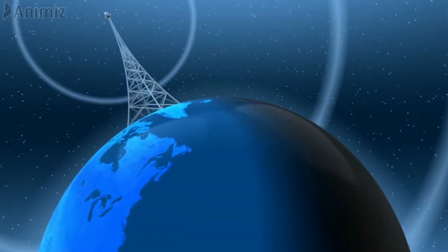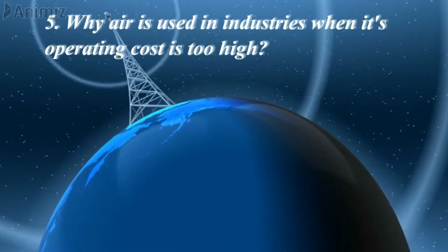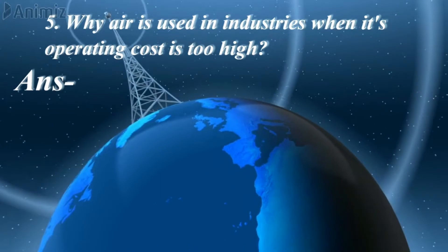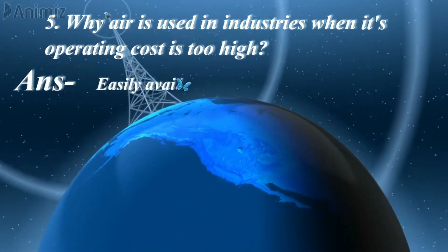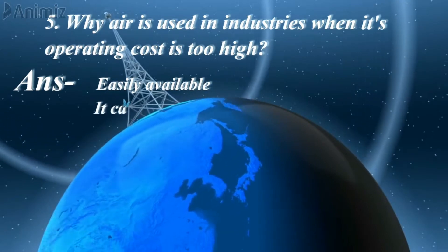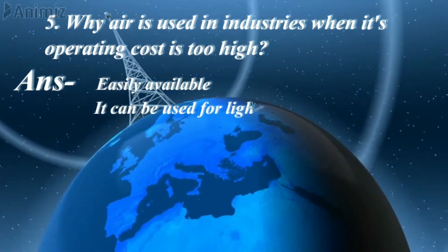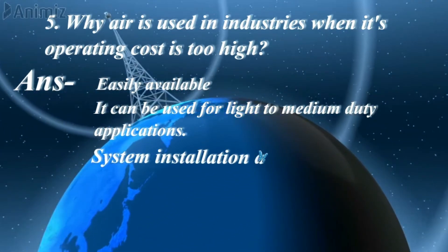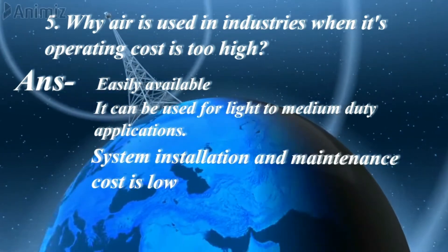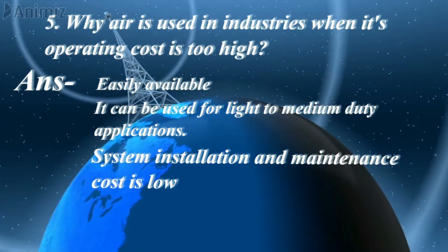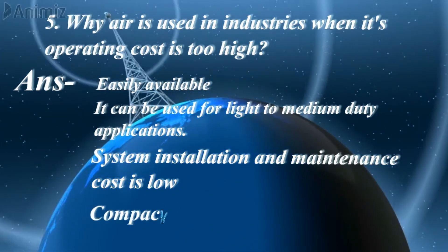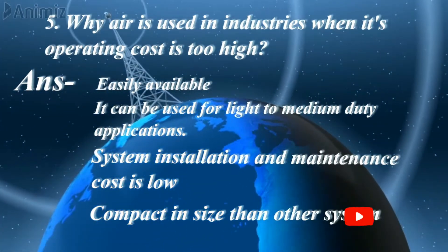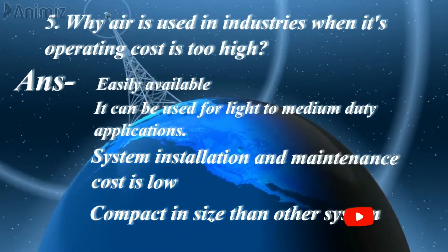Fifth question: why is compressed air used in industry when its operating cost is too high? It is a very interesting question. The answer is its availability is very easy, and it can be used to operate low to medium duty applications. The system installation and maintenance cost is very low compared to other systems such as motors, gearboxes, and engines. Also, the size of a pneumatic system is very compact compared to other systems like gearboxes, motors, and engines.